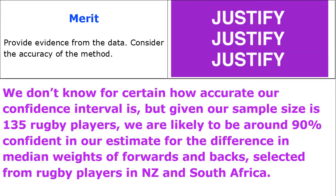For a merit, we need to have evidence and we need to be able to justify it. We don't know exactly how accurate our confidence interval is, but we do know that the sample size is about 135 rugby players in this particular sample. You can find that by going back to NZ Grapher and scrolling through the data to see how many data values there are. From a sample size of 135, we're likely to be around about 90% confident in our estimate for the difference in median weights of forwards and backs selected from rugby players in New Zealand and South Africa. This is the evidence about our accuracy.